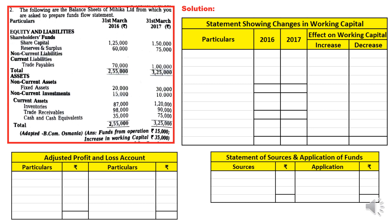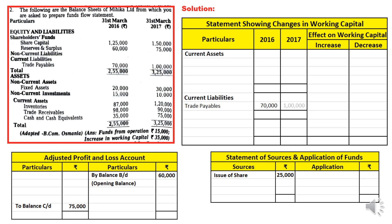Share capital: 125,000 to 150,000 — increase of 25,000, considered as issue of shares, a source of 25,000. Reserves and surplus: opening balance 60,000, closing balance 75,000, written as by balance brought down and to balance carried down in the adjusted P&L account. Trade payables — a current liability: 70,000 to 100,000 — current liability increasing means working capital decreases by 30,000. Fixed assets: 20,000 to 30,000 — increasing, so purchase of fixed assets of 10,000 is an application. Non-current investments: 15,000 to 10,000 — decreasing, assumed as sale of investments, a source of 5,000.